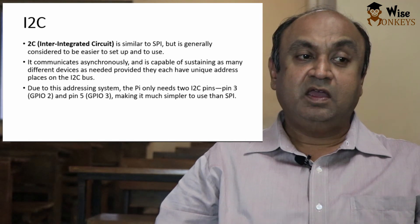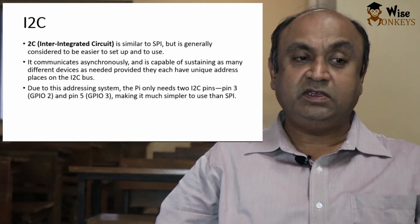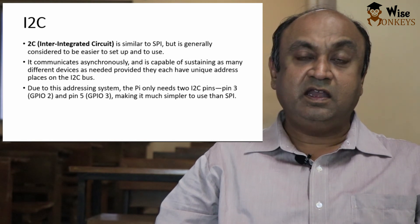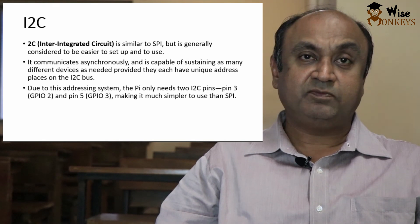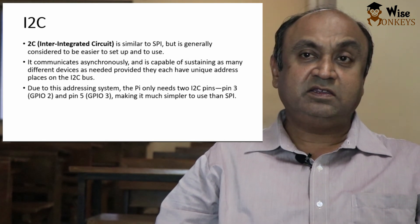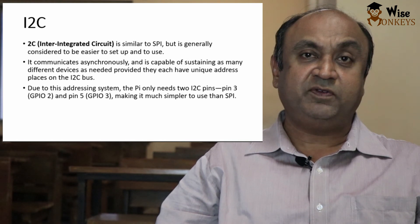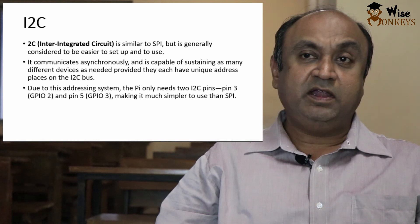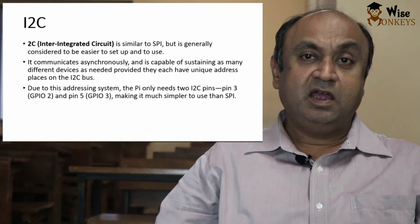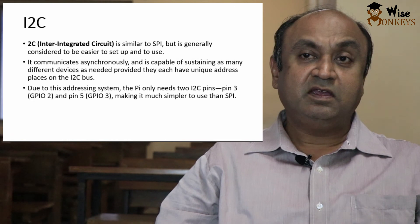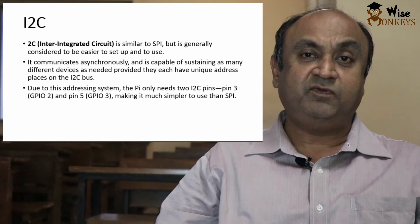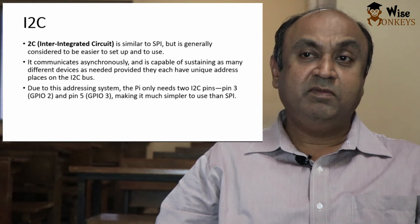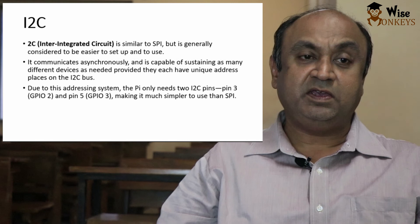What is I2C? I2C or I2C is inter-integrated circuit and is similar to SPI, but is generally considered to be easier to set up and use. It communicates asynchronously and is capable of sustaining as many different devices as needed provided they each have unique address places on I2C bus. Due to this addressing system, the Pi only needs two I2C pins, pin 3 GPIO2 and pin 5 GPIO3 making it much simpler to use than SPI.